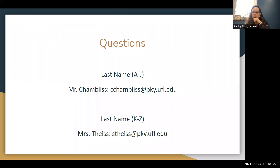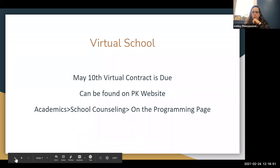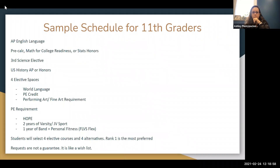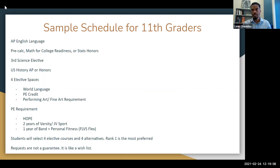Someone is asking to see the 11th grade slide again. For 11th grade, the courses most likely on your student's schedule are AP English Language, and for math: Pre-Calc, Math and College Readiness (MCR), or Probability and Statistics Honors. You'll also be able to choose your third science elective. For social studies, you'll go into US History, AP or Honors based on your choice. Then you'll have the other elective spaces you can choose from.